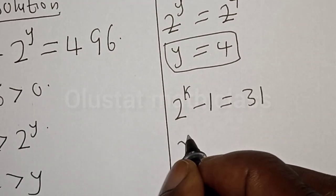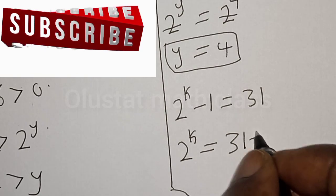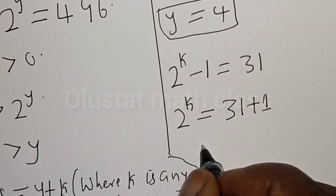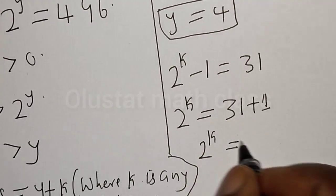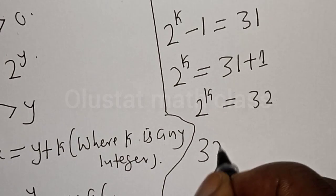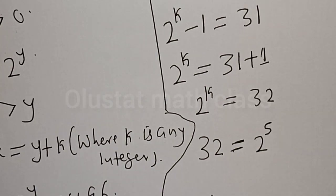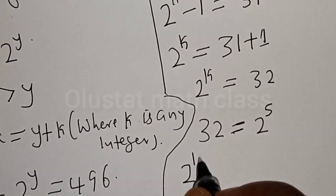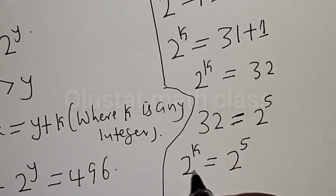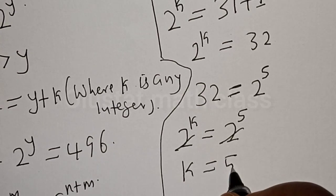Then 2 raised to power k is equal to 31 plus 1. That is, moving minus 1 across the equal sign it becomes plus 1. So we have 2 raised to power k is equal to 32. And 32 can be expressed as 2 raised to power 5. Therefore, 2 raised to power k equals 2 raised to power 5. They have the same base, so k is equal to 5.